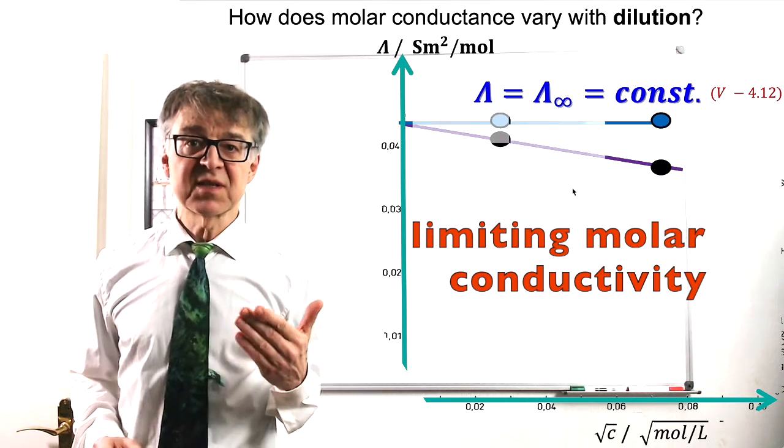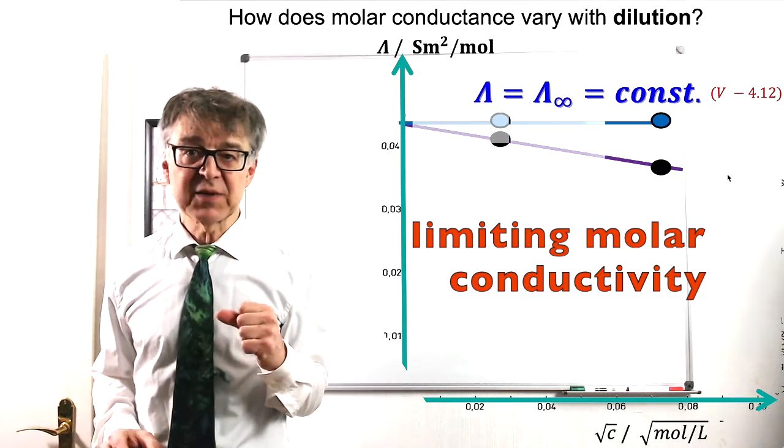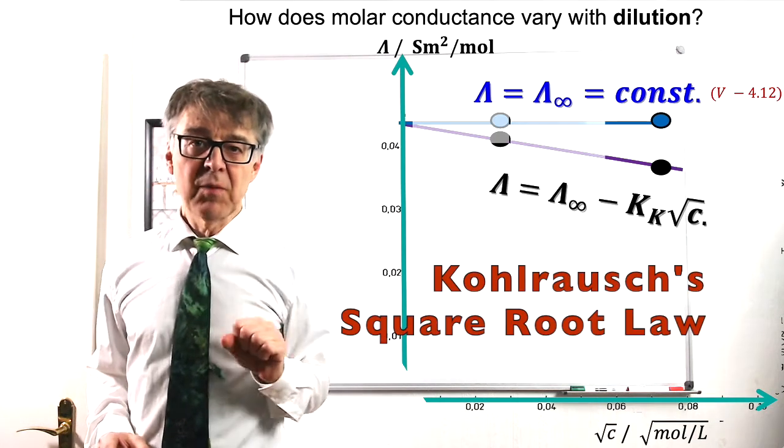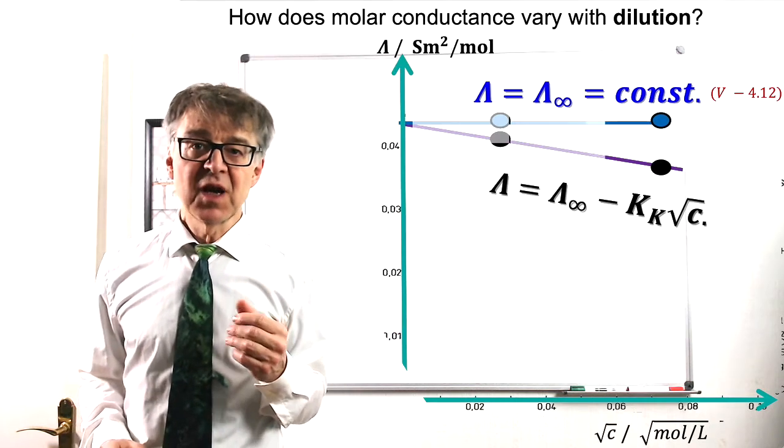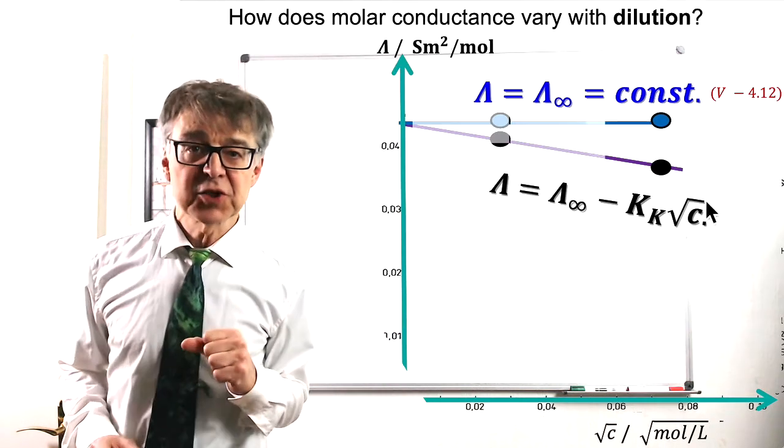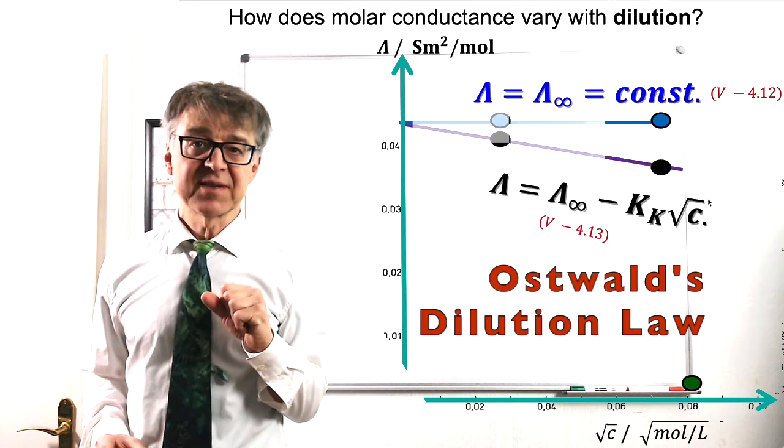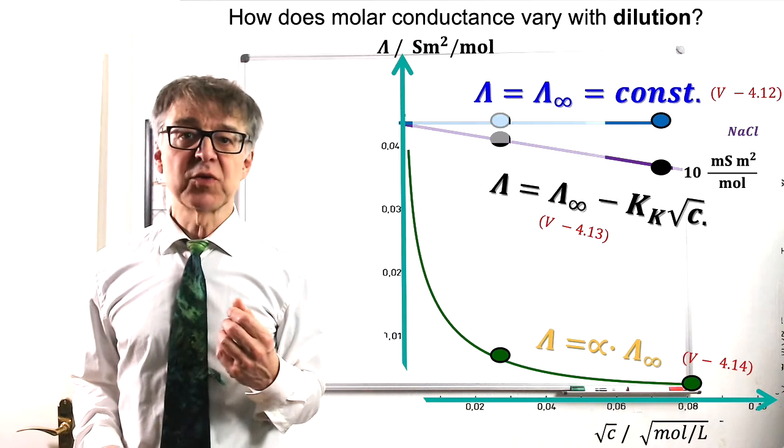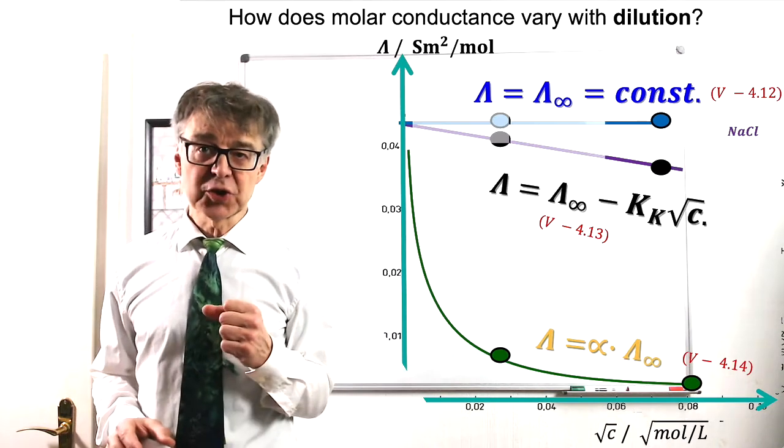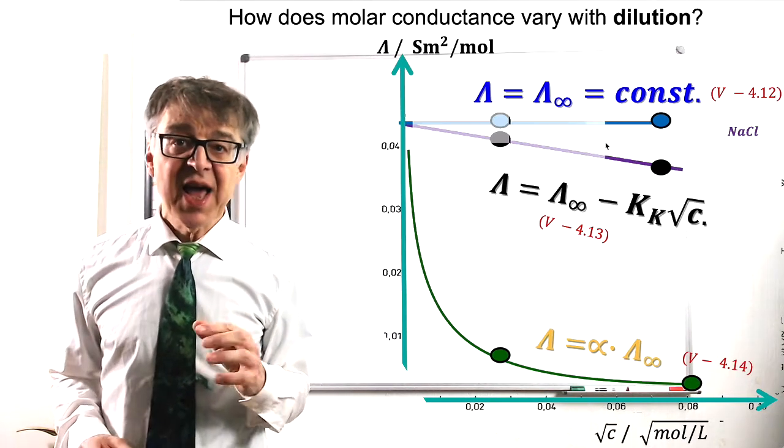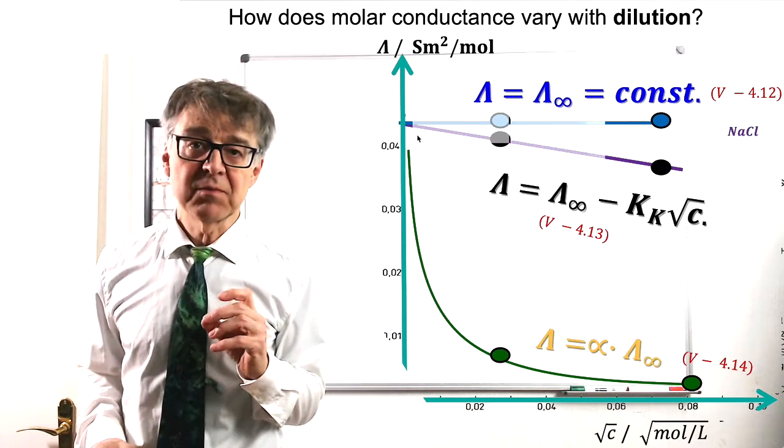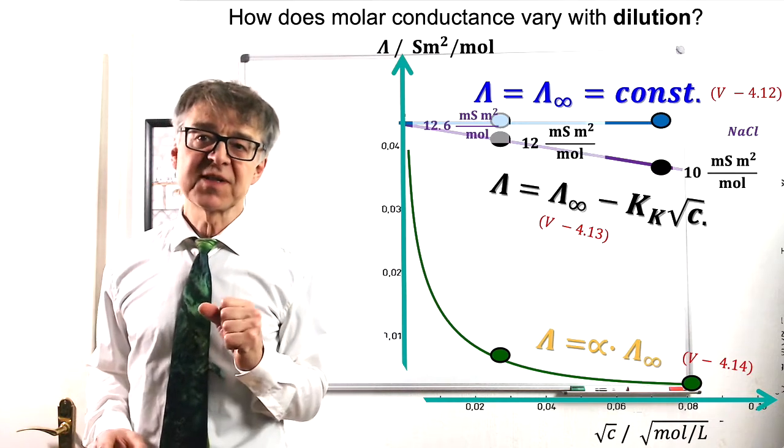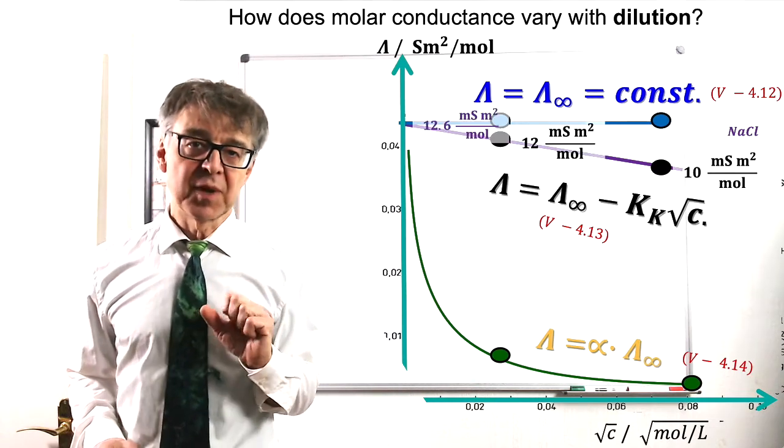Determining limiting conductivity is different for strong and weak electrolytes. With strong electrolytes, square root law by Kohl-Rausch can be used, while Oswald's law of dilution is valid for weak electrolytes. As sodium chloride is a strong electrolyte, we are to measure a number of saline solutions of different concentrations and extrapolate according to the square root law, ending up at a limiting conductivity of 12.6 mS m2 per mole.